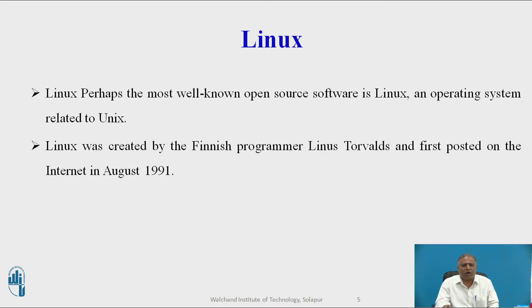Although Linux is not used in many desktop systems, it is a leading operating system on servers, mainframe computers, and supercomputers. Linux has become the operating system of choice in the high-performance computing market, powering 97% of the world's fastest computers. IBM, HP, Intel, Dell, and Oracle have made Linux a central part of their offerings to corporations. The rise of Linux has profound implications for corporate software platforms including cost reduction, reliability, resilience, and integration, because Linux works on all major hardware platforms from mainframes to servers to clients.